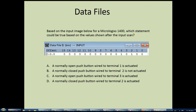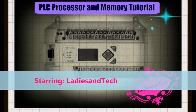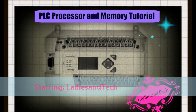Statement B: a normally open push button wired to terminal 2, not actuated. A normally open push button when not actuated gives a logic level of one. Looking at bit two in the input image, it is a logic level of one - so B is a true statement. Statement C: a normally open push button wired to terminal 3 is actuated. When actuated it should give a logic level of one, but looking at bit three in the input image it is a logic level of zero - so C is false. Statement D: a normally closed push button wired to terminal 2 is actuated. A normally closed push button that is actuated gives a logic level of zero, but bit two shows a logic level of one - so D is false. That concludes this tutorial.